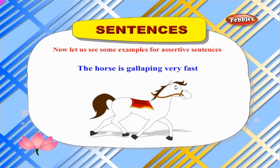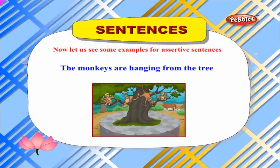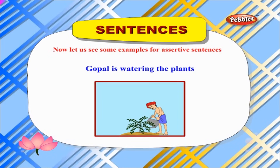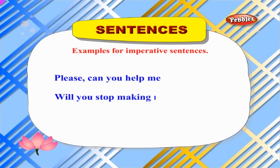Now let us see some examples for assertive sentences: 'The horse is galloping very fast.' 'The monkeys are hanging from the tree.' 'Gopal is watering the plants.' Now let us see some examples for imperative sentences: 'Can you help me?' 'Will you stop making noise?' 'Excuse me, can I come in?'